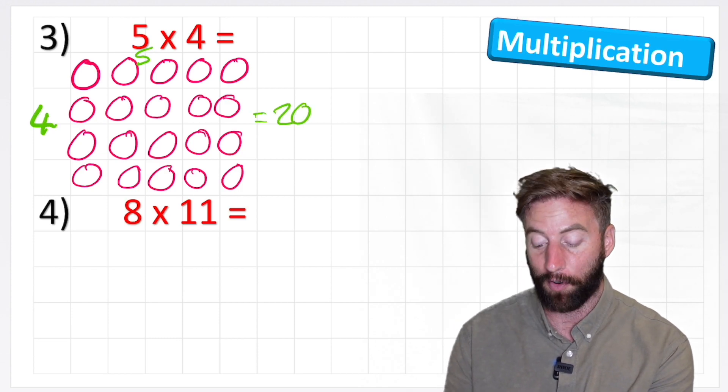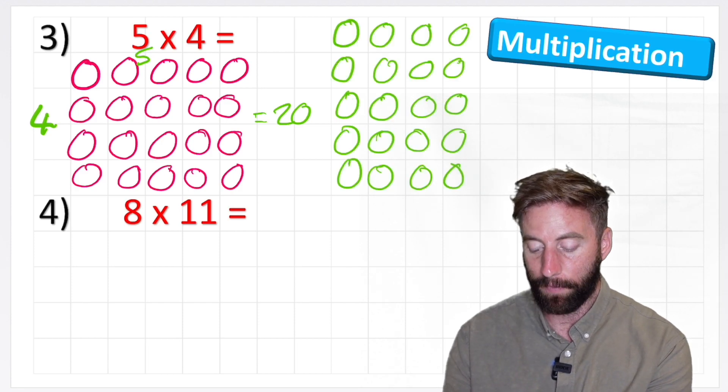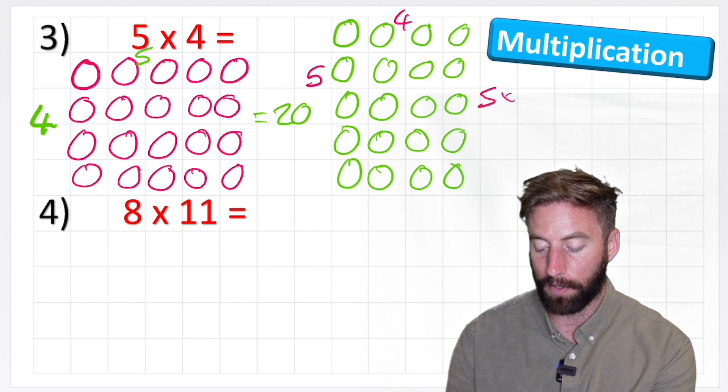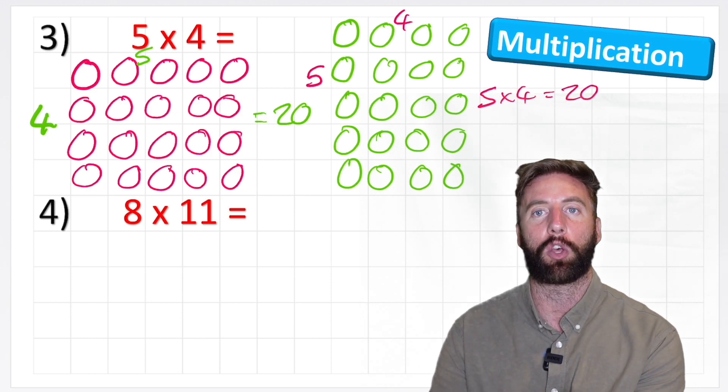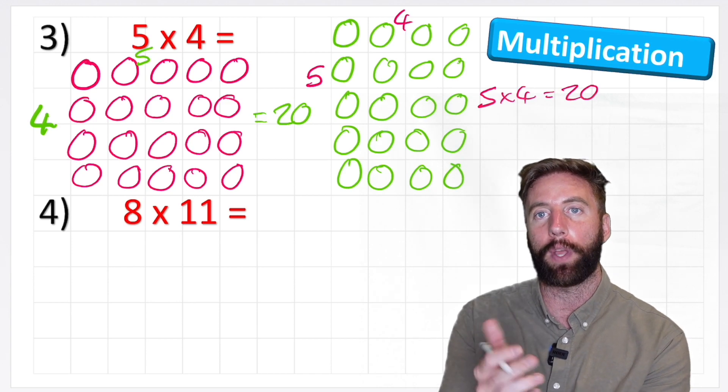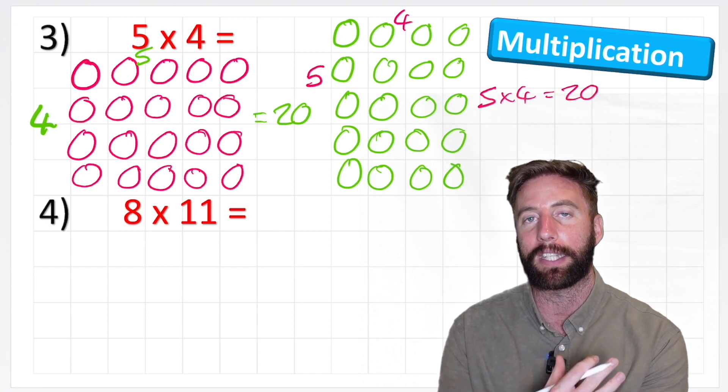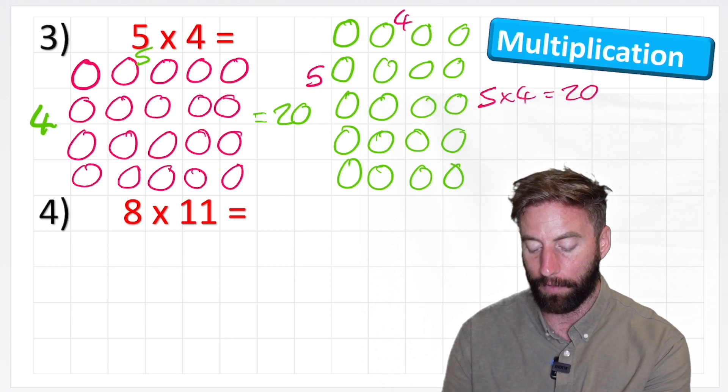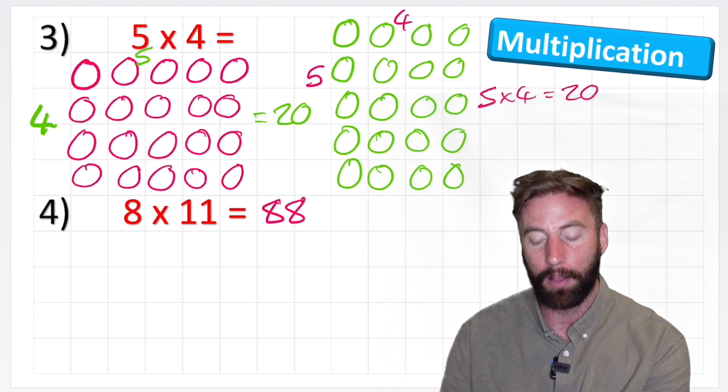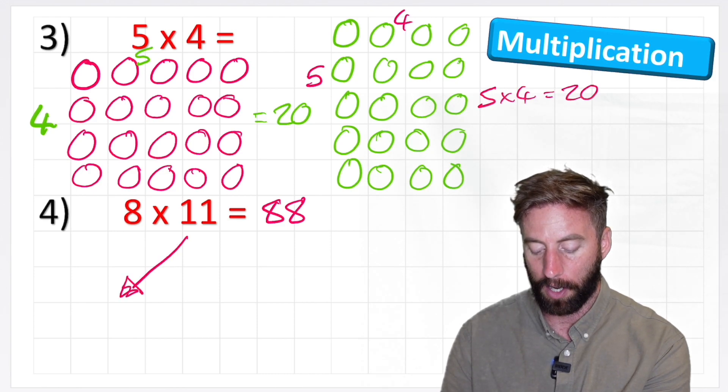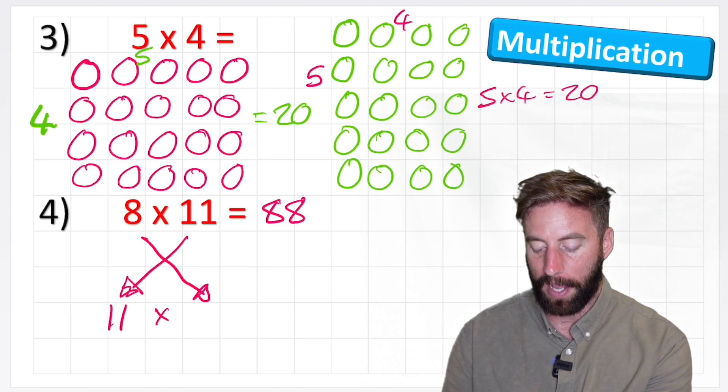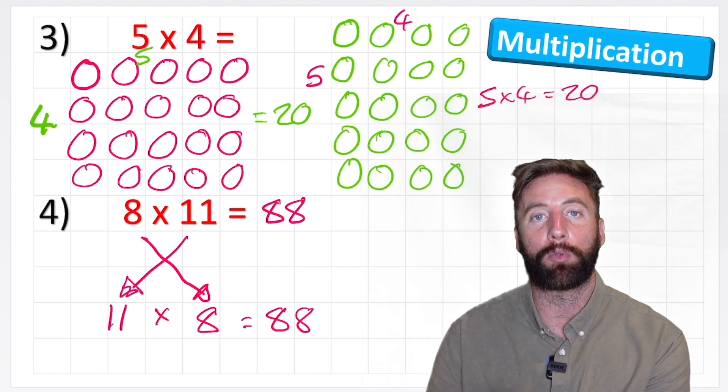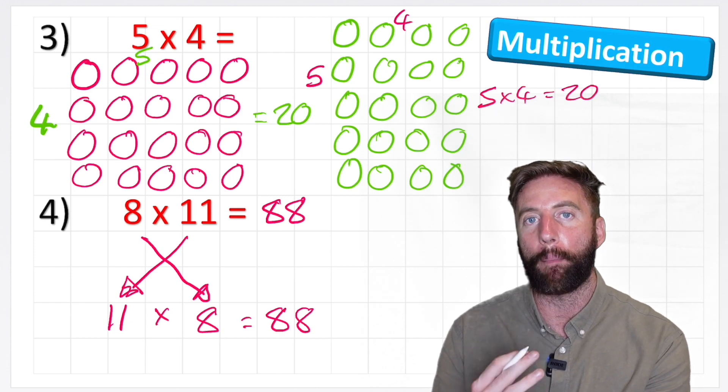But now if I flip this array around, this array now says 5 × 4. And 5 × 4 still equals 20. So multiplication is the same. It doesn't matter which way around we put our question, we're still going to get the same answer. Let's demonstrate with 8 × 11. 8 × 11 is 88. But also, move them the other way around. 11 × 8 is also 88. So multiplication and addition are both commutative.